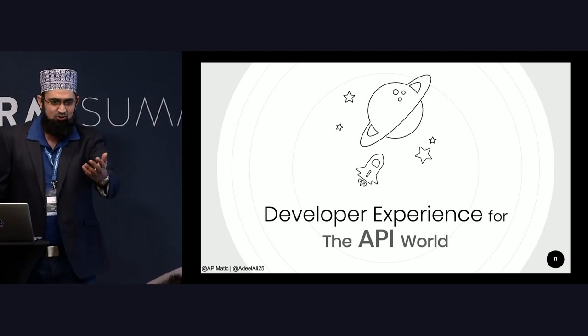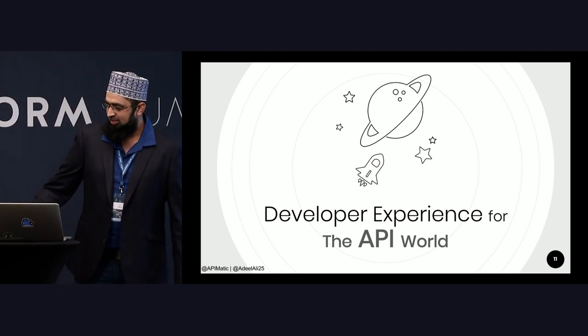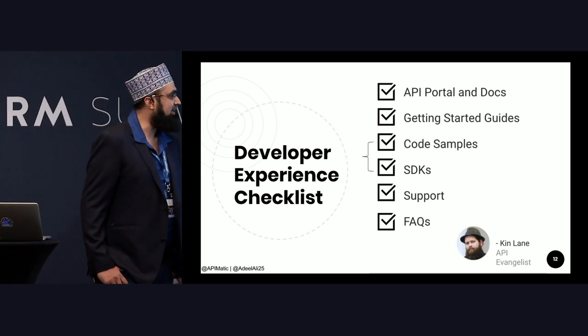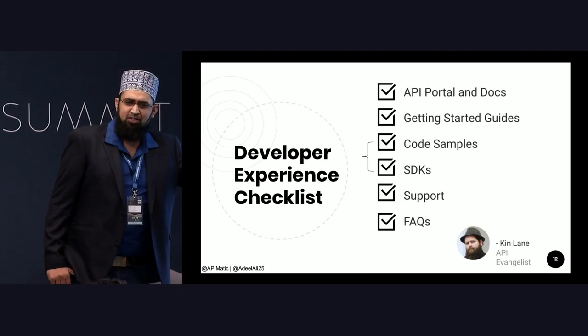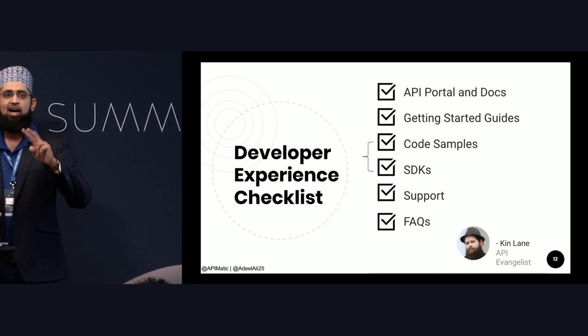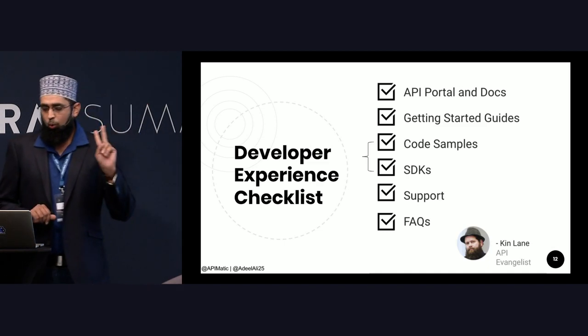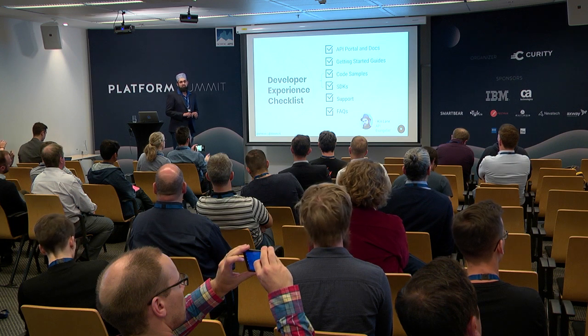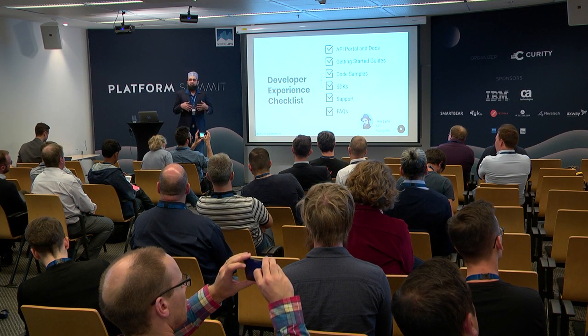There's always a list — Christophe presented a very nice list. I'm going to quote my friend Kin Lane. Here's a list of things you need to have with your APIs to provide a great developer experience. I'll be focusing on only two things: one, code samples, and number two, SDKs. The reason is that these two are where the real complexity comes. If you are deciding to include SDKs and code samples in your developer portal, you need to be dealing with a lot of things.